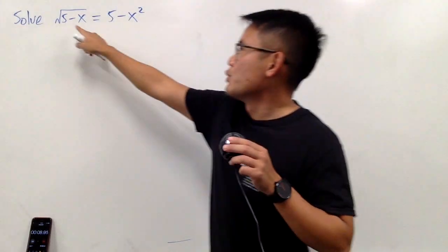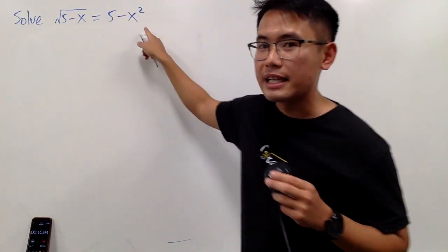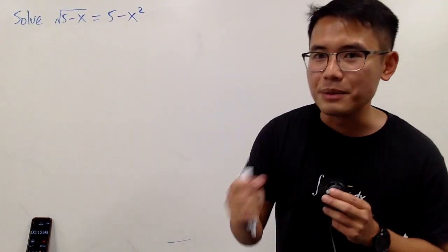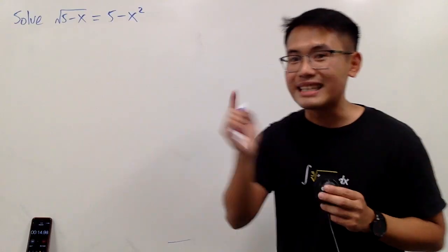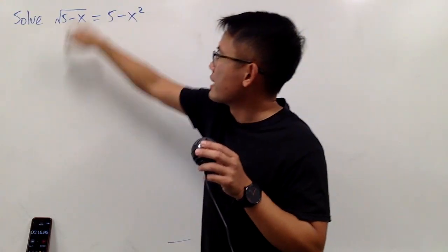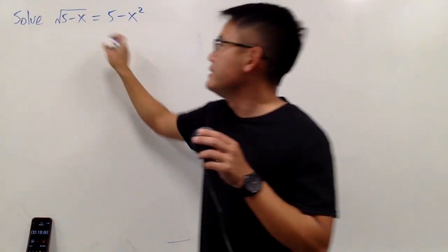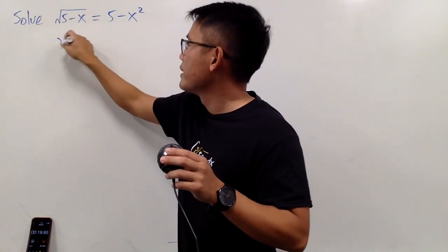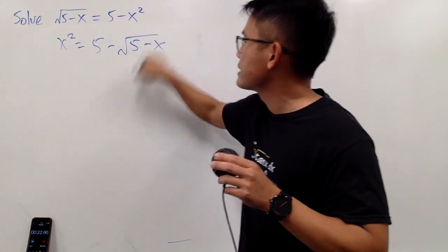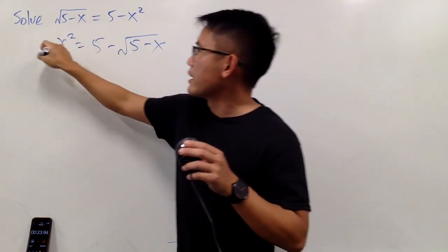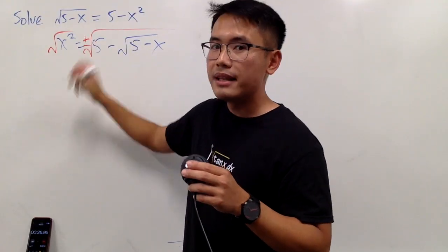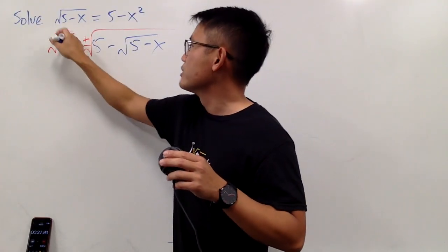Here's the idea. We have 5 minus x under the square root, and this is 5 minus x squared. I'll move terms to the other side — you'll see why. This gives us x squared equals 5 minus the square root of 5 minus x. And of course, I can just take the square root on both sides. Don't forget the plus-minus, and we can cancel this out.